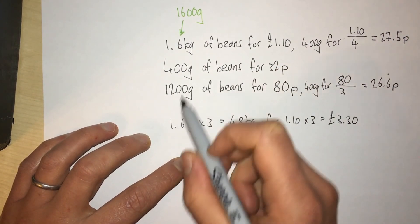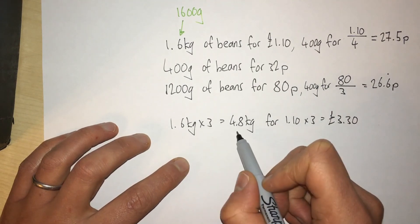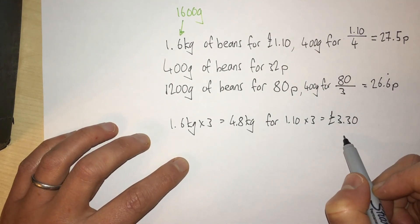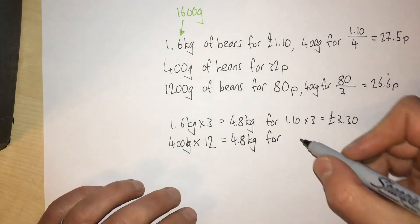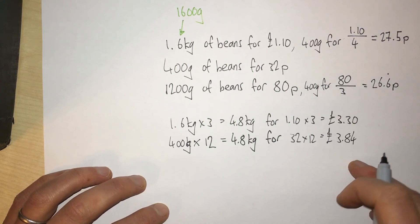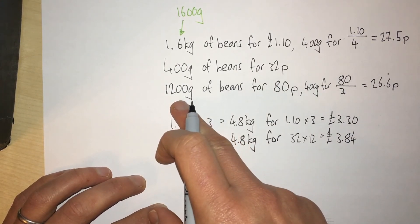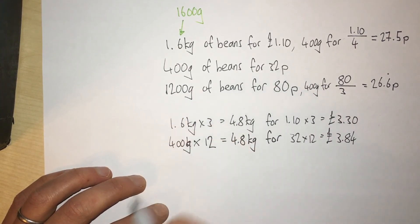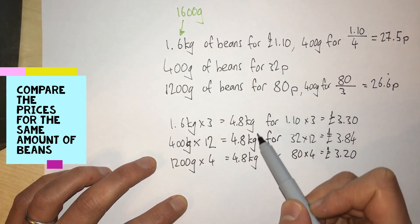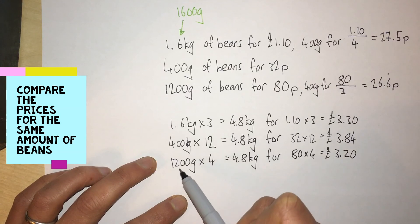If I multiply the first one by 3, I get 4.8 kilograms for £3.30. I get 4.8 kilograms for £3.84. This one I need to multiply by 4 to get my 4.8 kilograms. Now that I have them all at the same weights, I can see that the last one is the best deal.